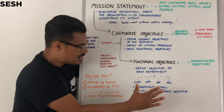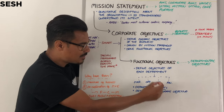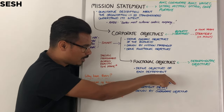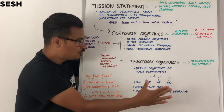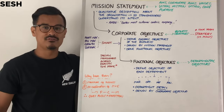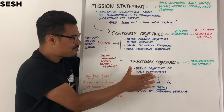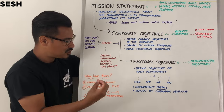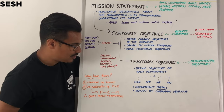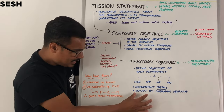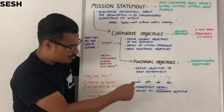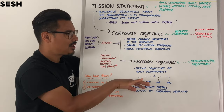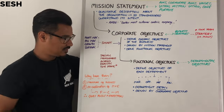Key thing is, functional objectives will be in more detail than you'd get at a corporate level, because they're specific to that department. And again, functional objectives might use SMART fashion in order to write those objectives. They are driven by the corporate objectives, as they are the lowest level of this hierarchy.